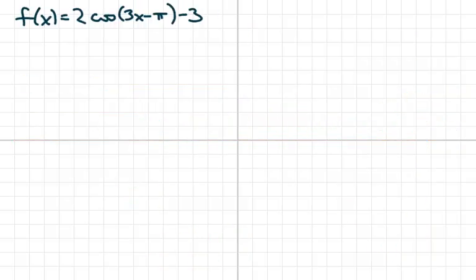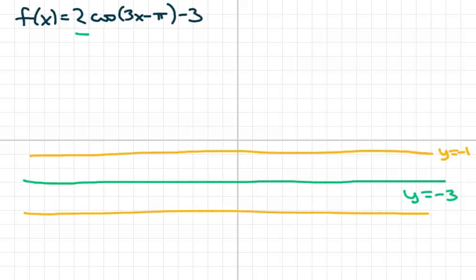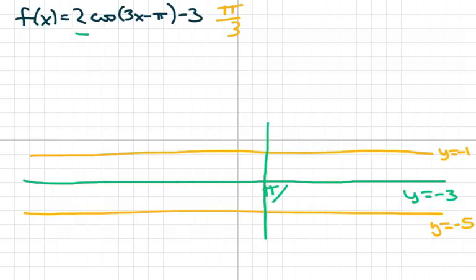Next one we have: our new center line is at y equals negative 3. My amplitude is 2, so I'm going up 2 — this is going to be at y equals negative 1. Go down 2 and we're going to be at y equals negative 5. That gives me my framework. My phase shift is pi over 3, which is our starting point. Pi over 3 recalls 60 degrees.